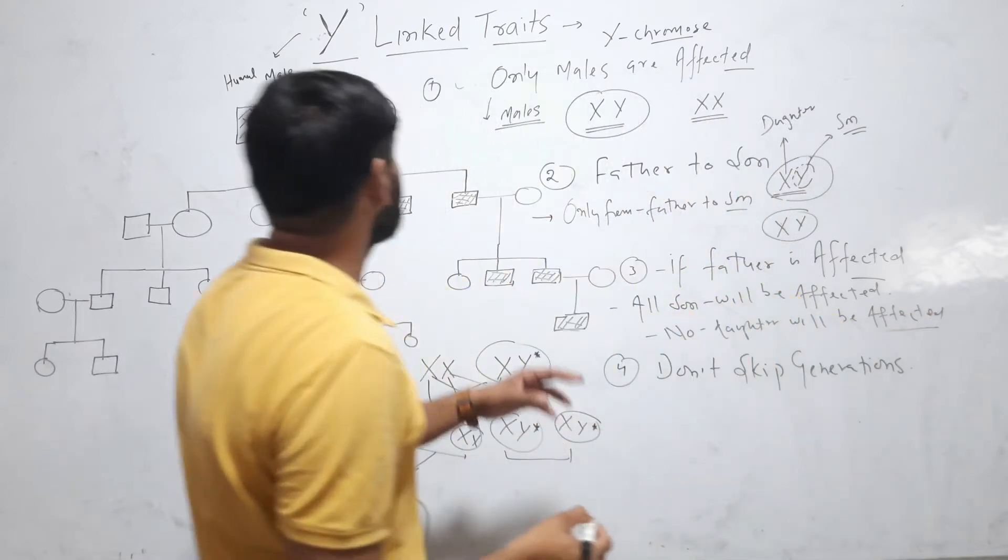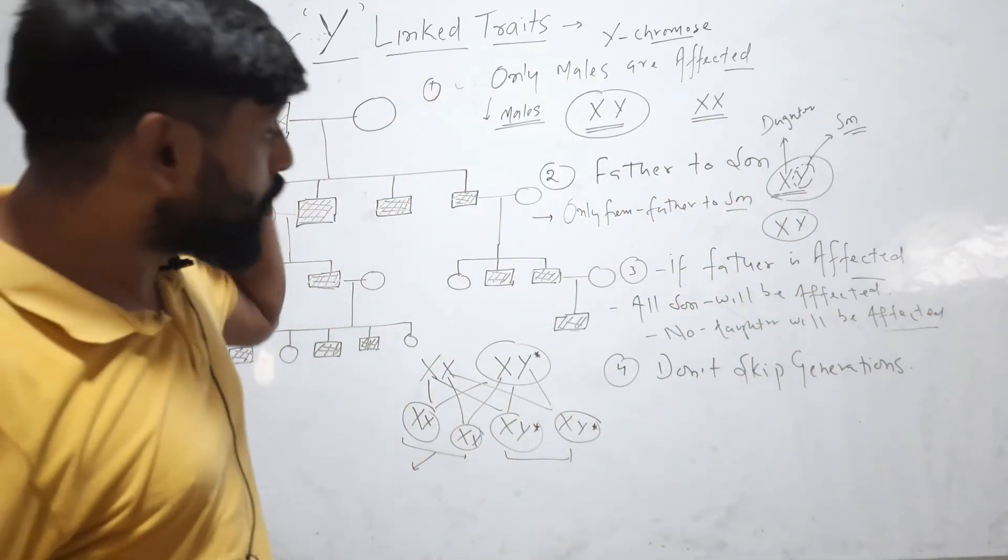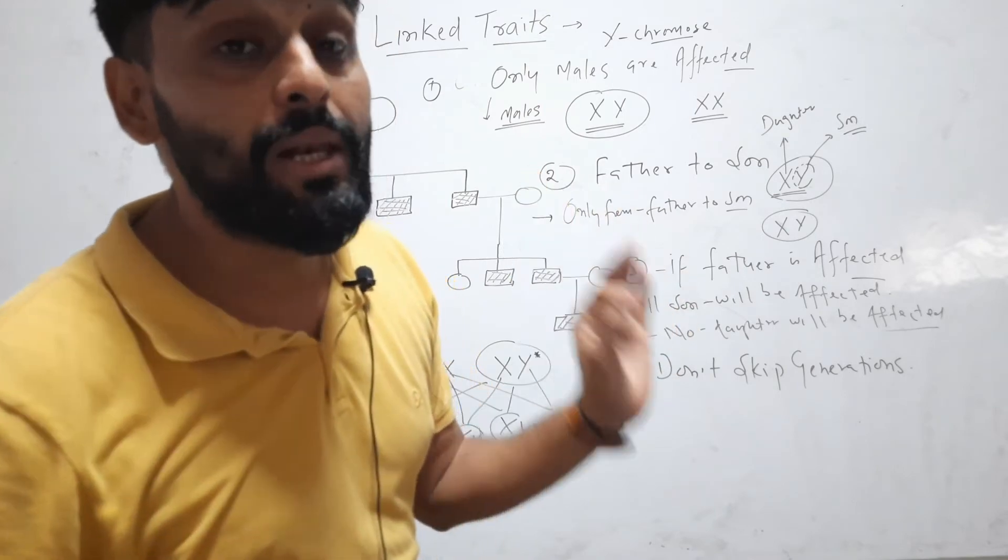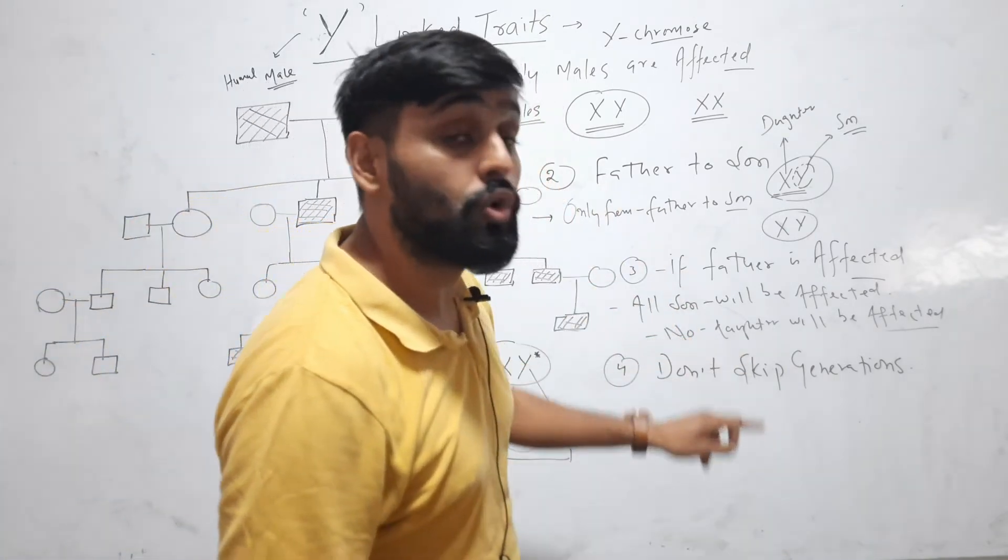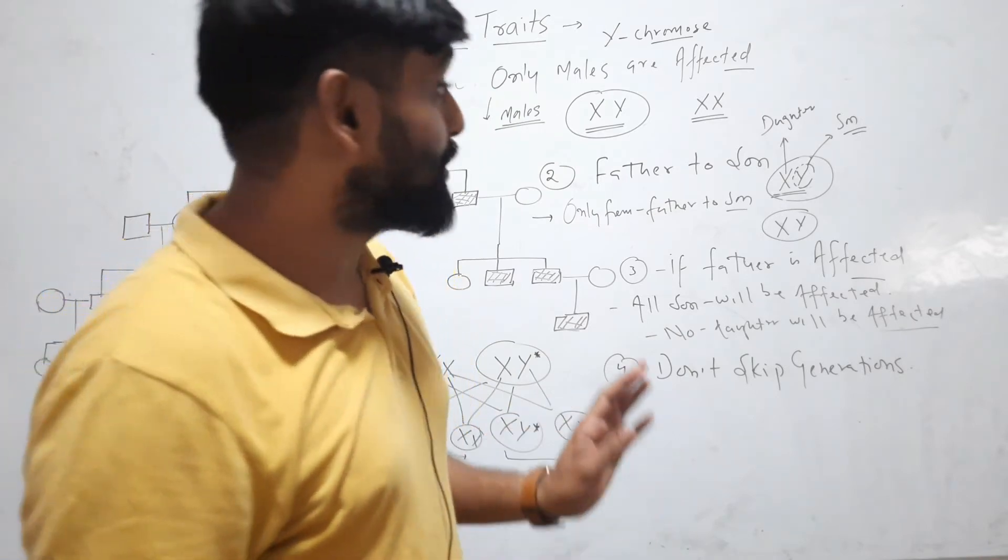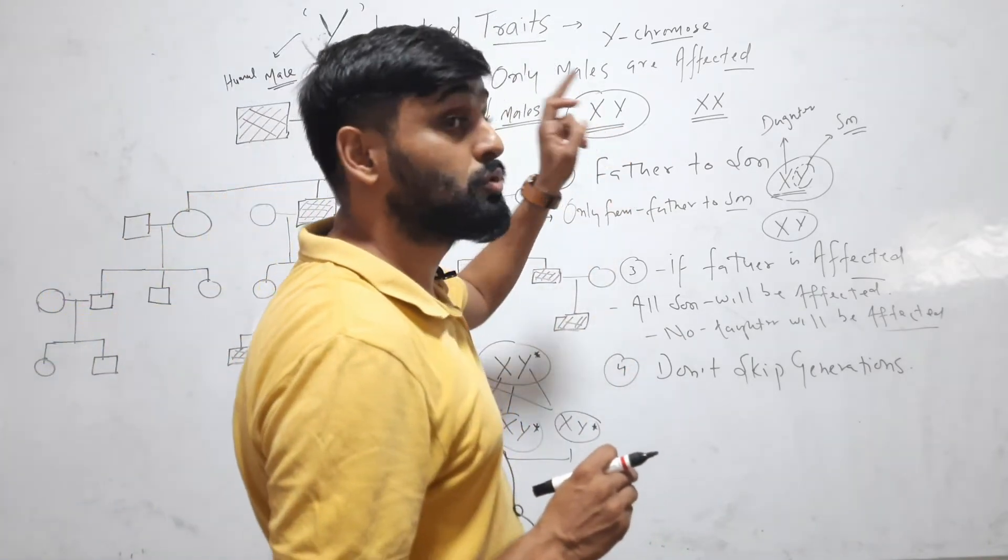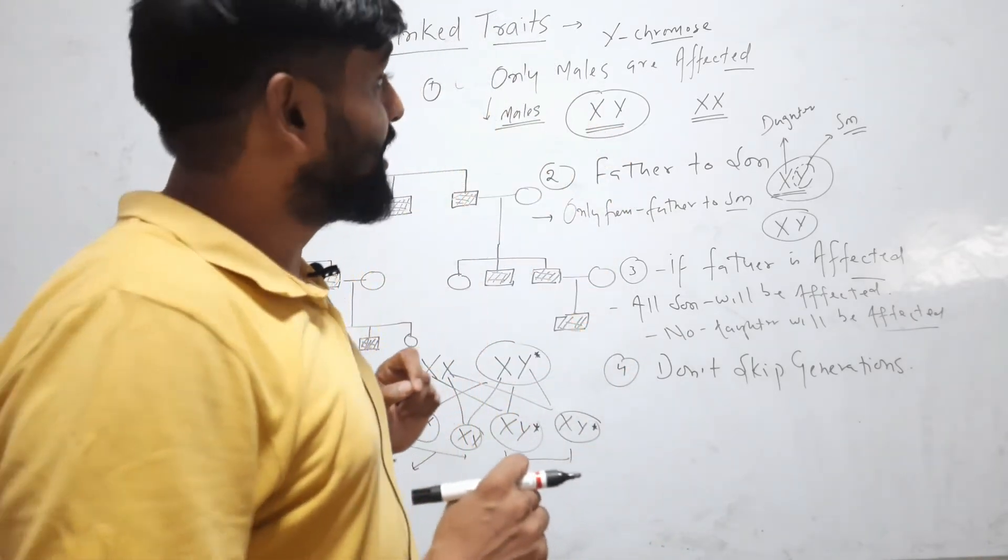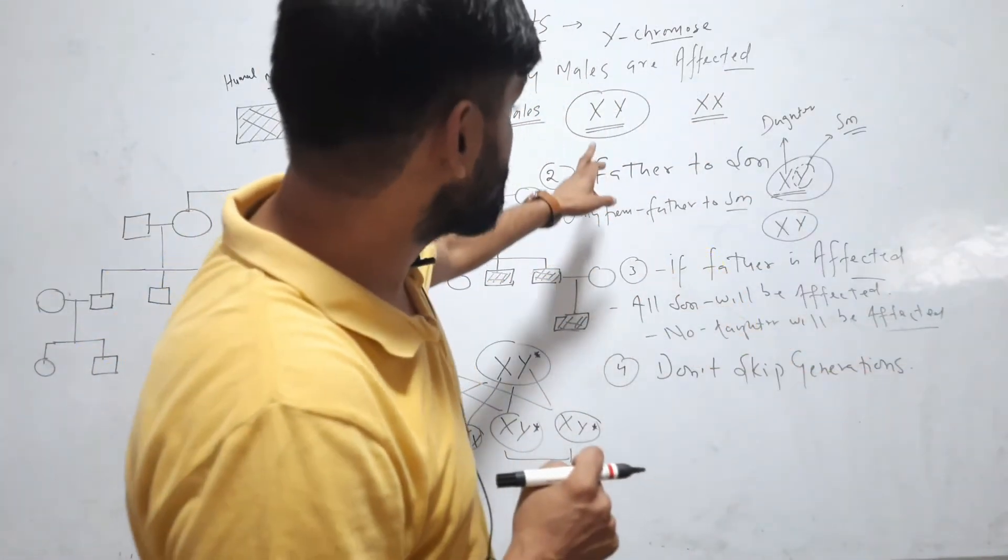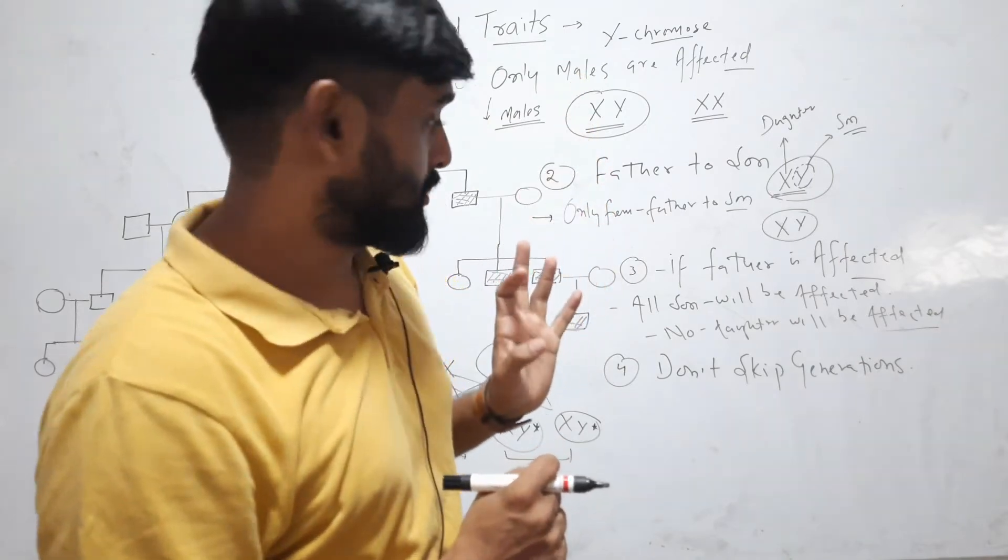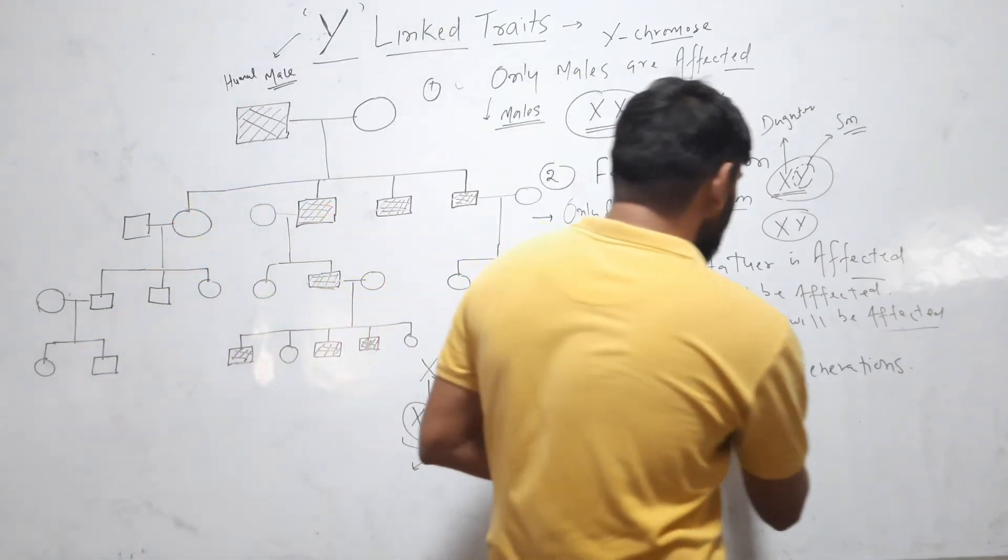If your father is affected with Y-linked trait, then all of his son will be affected and its daughter will not be affected because Y-chromosome is given by father to son. Father gives X-chromosome to daughter. So no daughter will be affected.